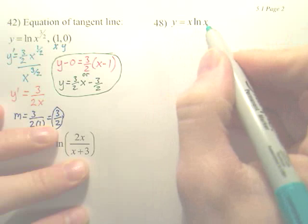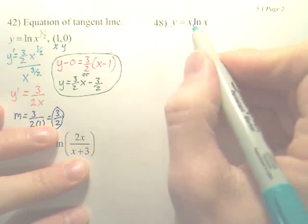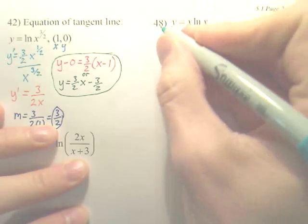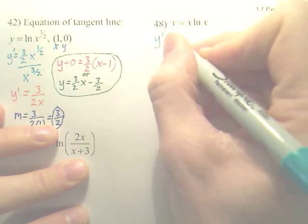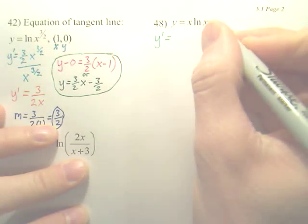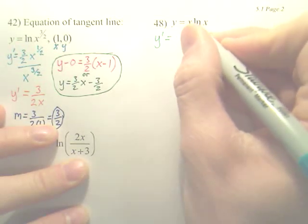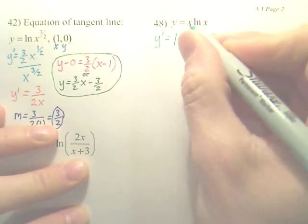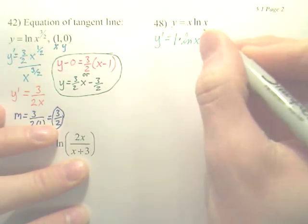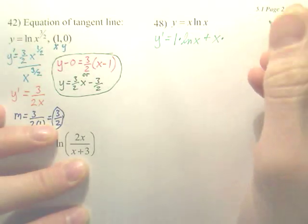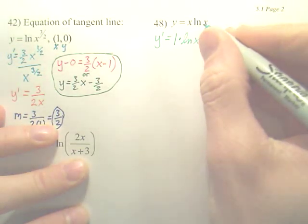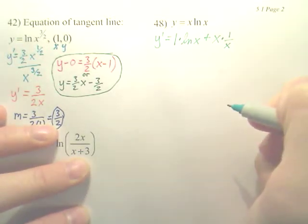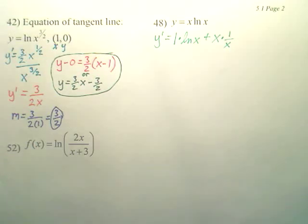To derive this, you are going to see a product rule. So, y prime. The product rule states, derive the first, leave the second. So, derive x, you get 1. Leave the ln x. Plus, leave the x. What's the derivative of ln x? It's u prime over u, so x derived is 1, over u, which is x. There's my answer, but it could be simplified.